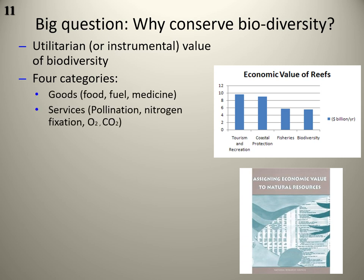These include goods — the environment provides food through plants, animals, and soil; fuel through wood and other means; medicine through plants; and construction materials. The environment also provides ecosystem services: pollination, nitrogen fixation, recycling of nutrients back into the soil, oxygen production by plants, carbon dioxide uptake, and waste decomposition — all processes that keep things going.